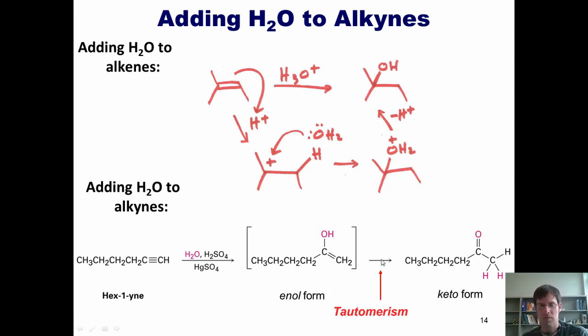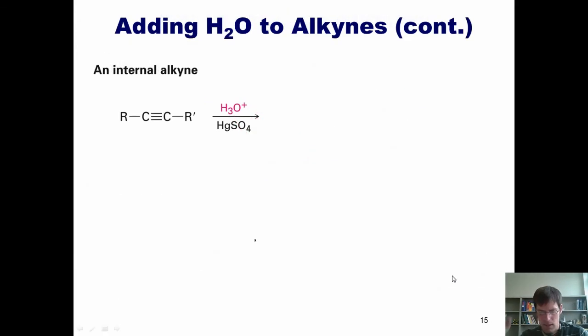Now, in real life, ketones always exist transiently as enols going back and forth, but the keto form is much, much more stable. Now, if you treat an internal alkyne with the same reagents, there's no distinction stability-wise between these two carbons. In other words, if I protonate one, I get a carbocation that's equally stable as if I were to protonate the other. Thus, after the water comes in, you end up getting a mixture of both ketone products. Does that make sense? I hope so.